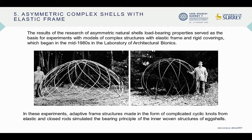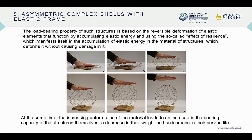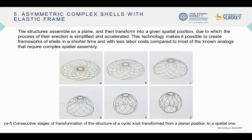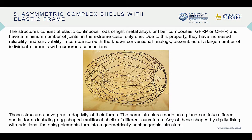Asymmetric complex shells with elastic frames: the results of the research served as the basis for experiments with models of complex structures. Adaptive frame structures made in the form of complicated cyclic knots from elastic and closed rods simulated the bearing principle of the inner woven structures of eggshells. The structures assemble on a plane and then transform into a given spatial position, making it possible to create frameworks in a shorter time and with less labor costs. The structures consist of elastic continuous rods of light metal alloys or fiber composites and have a minimum number of joints.